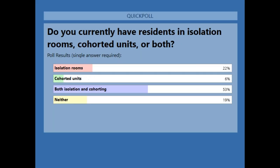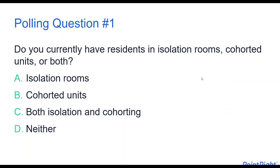Looking at the poll results: 22% of attendees have one or more isolation rooms currently in use; 6% have just cohorted units; the majority — not surprisingly — have a combination of both; and 19% have neither, which hopefully means no cases.